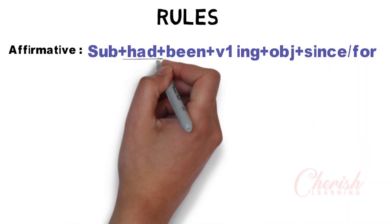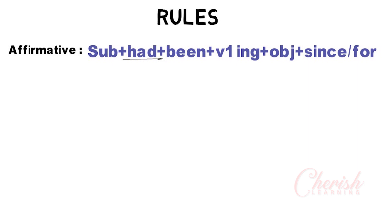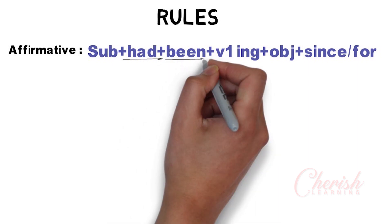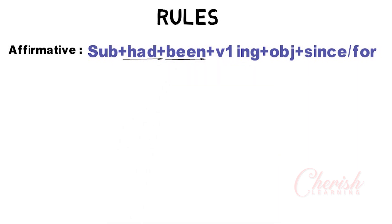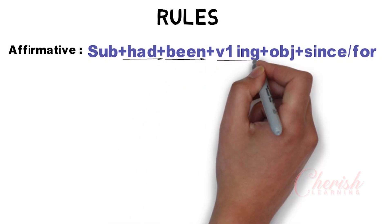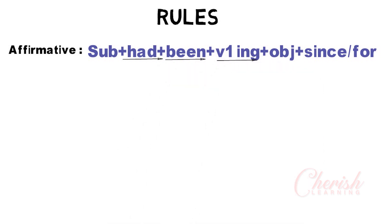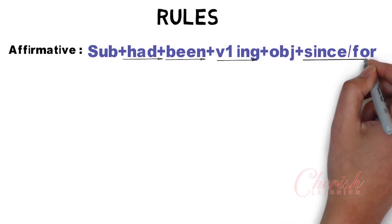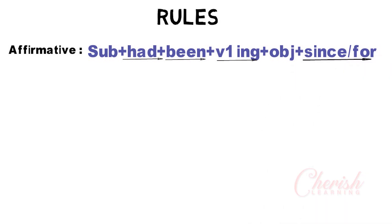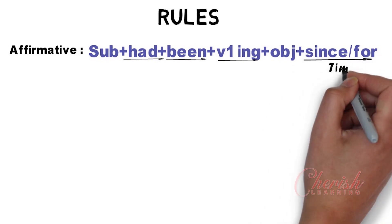How do we make the rule? Subject will come first, then after subject comes 'had,' then 'been.' And since it is continuous, it will be 'ing.' Since and for — we put the time at the end with verb+ing. Since or for is used because the action is still happening.